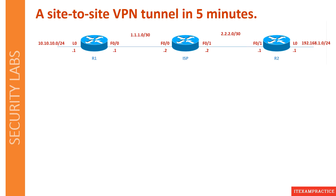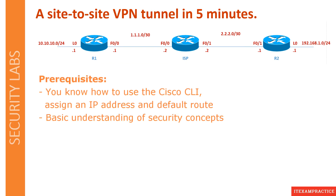I want to show you how to create a basic site-to-site VPN in less than five minutes. I will assume that you have a good idea about some basics when it comes to routers and switches — it means you know how to configure an IP address, you know what an access list is, and you know how to create a static route on a Cisco device. It would be nice to understand some basics when it comes to network security like encryption, hashing, and key exchange.